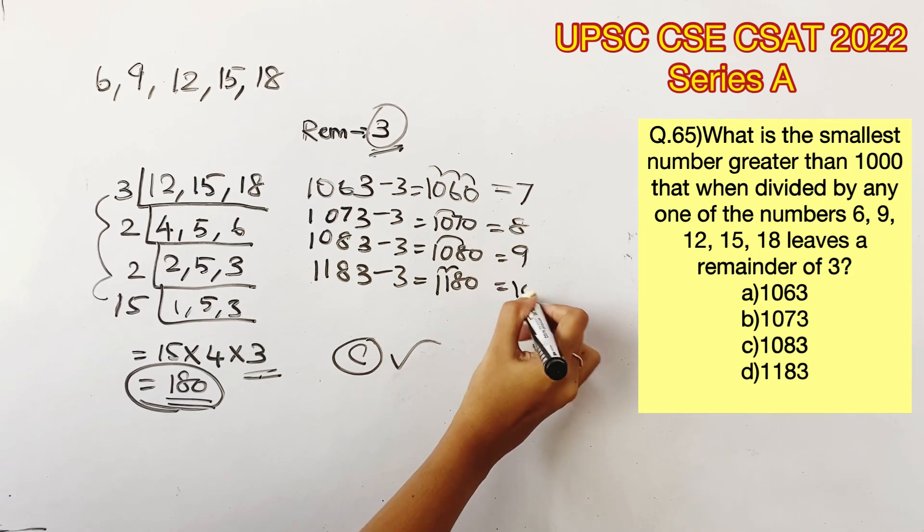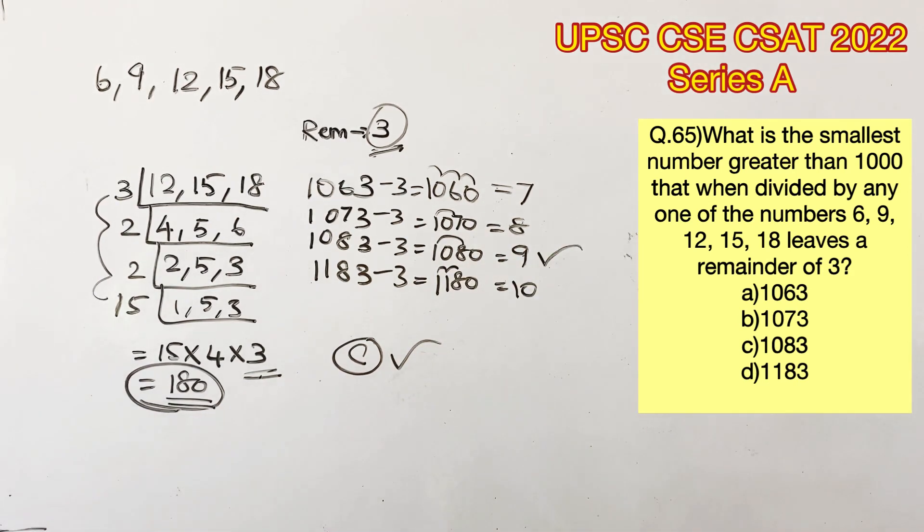1 + 6 gives us 7, 1 + 7 gives us 8, 1 + 8 gives us 9, and 1 + 1 + 8 gives us 10. Only the third option is a number which is divisible by 3, so option C is the right answer. However, this method won't work if more than one option were divisible by 3.